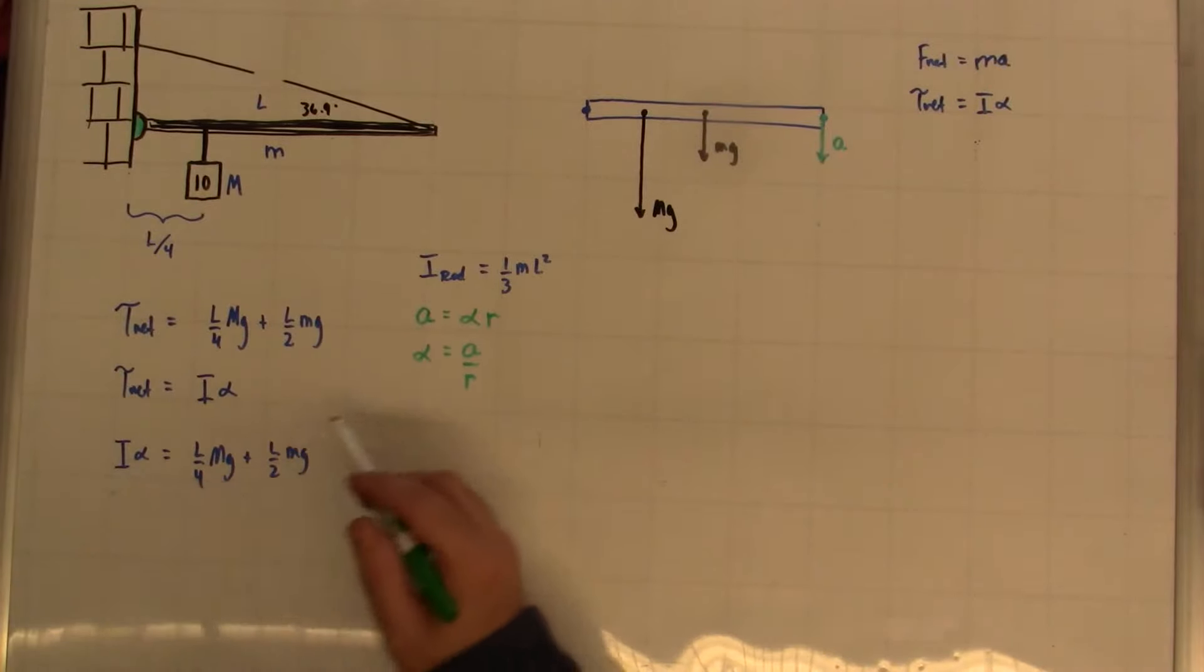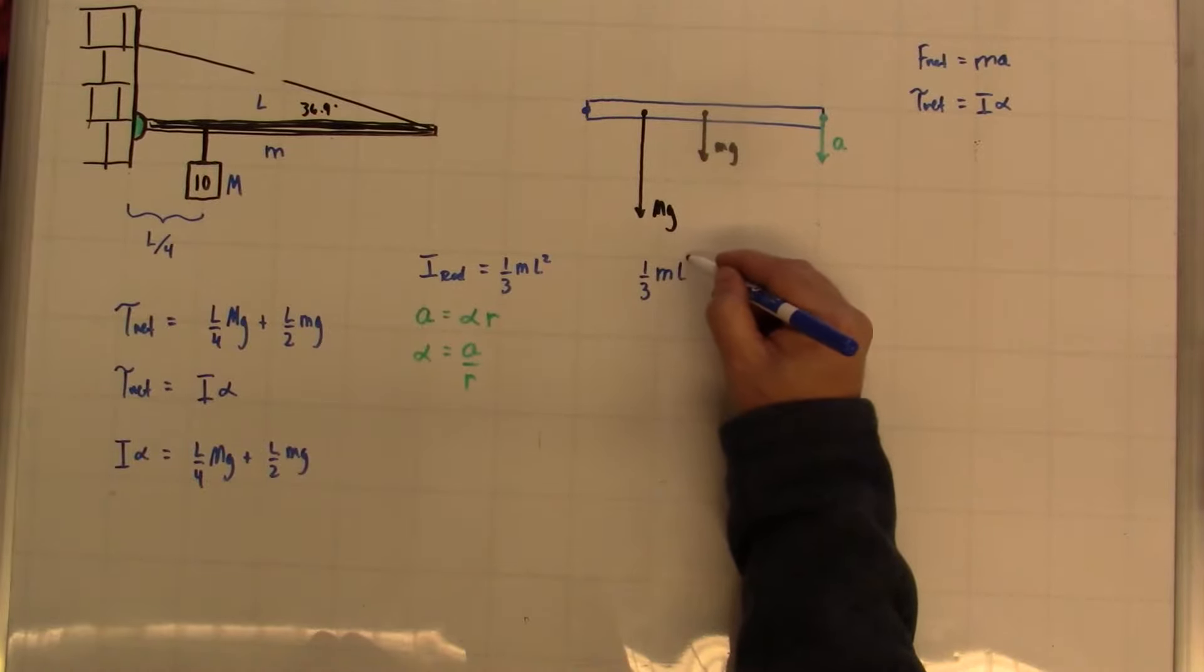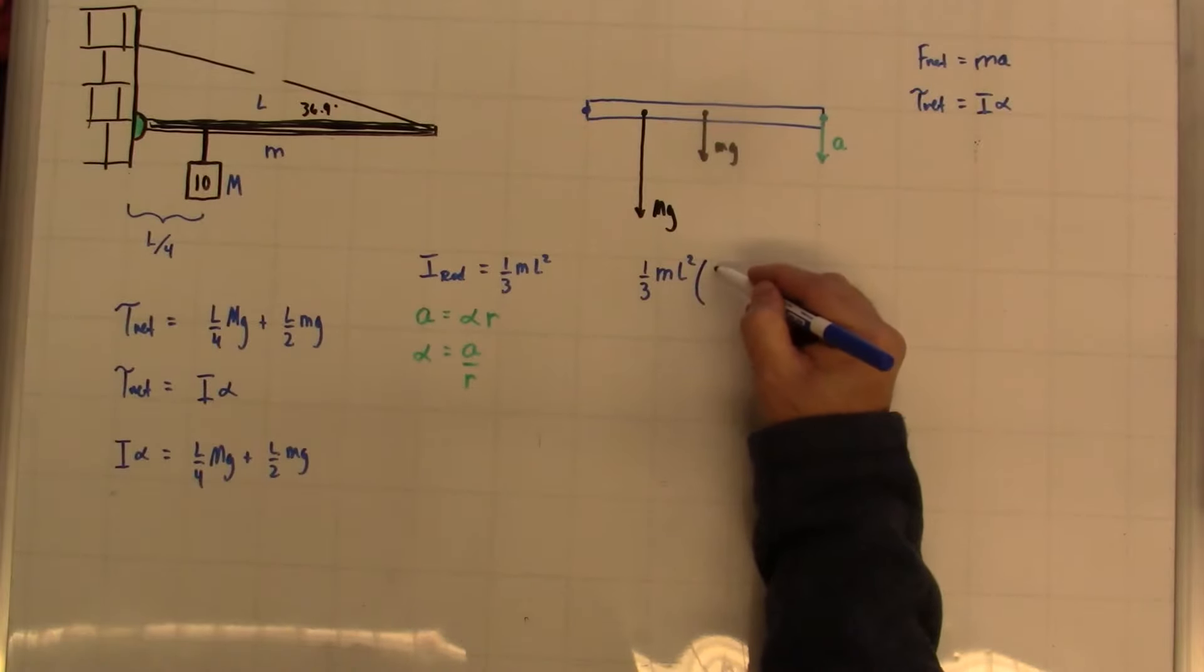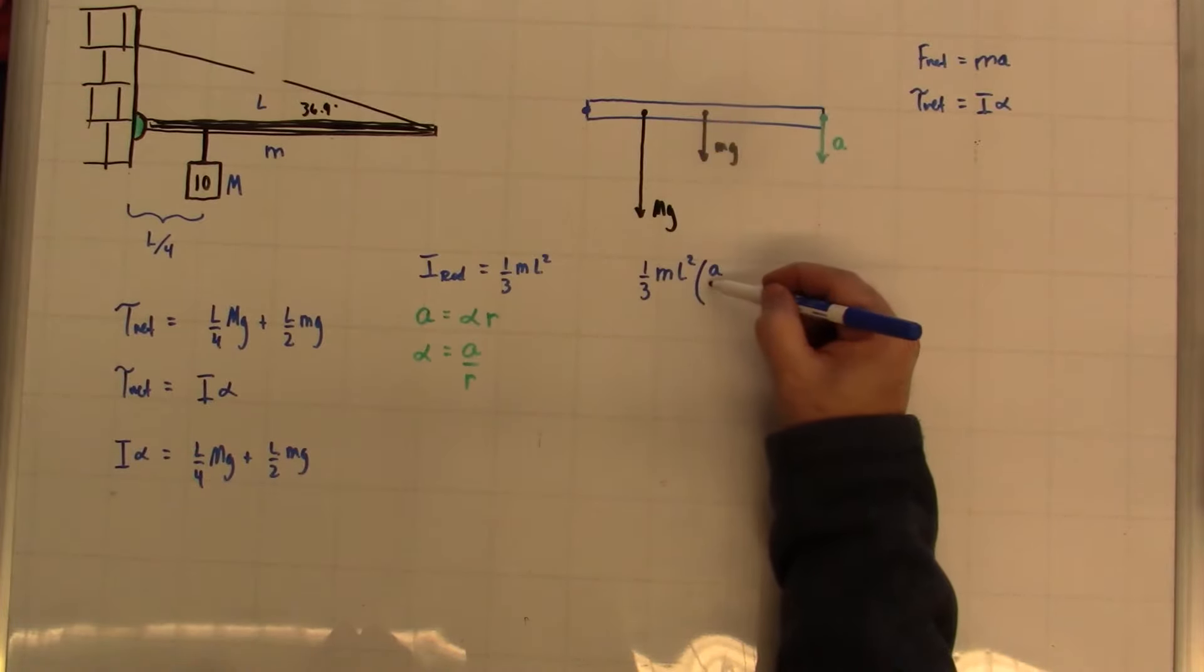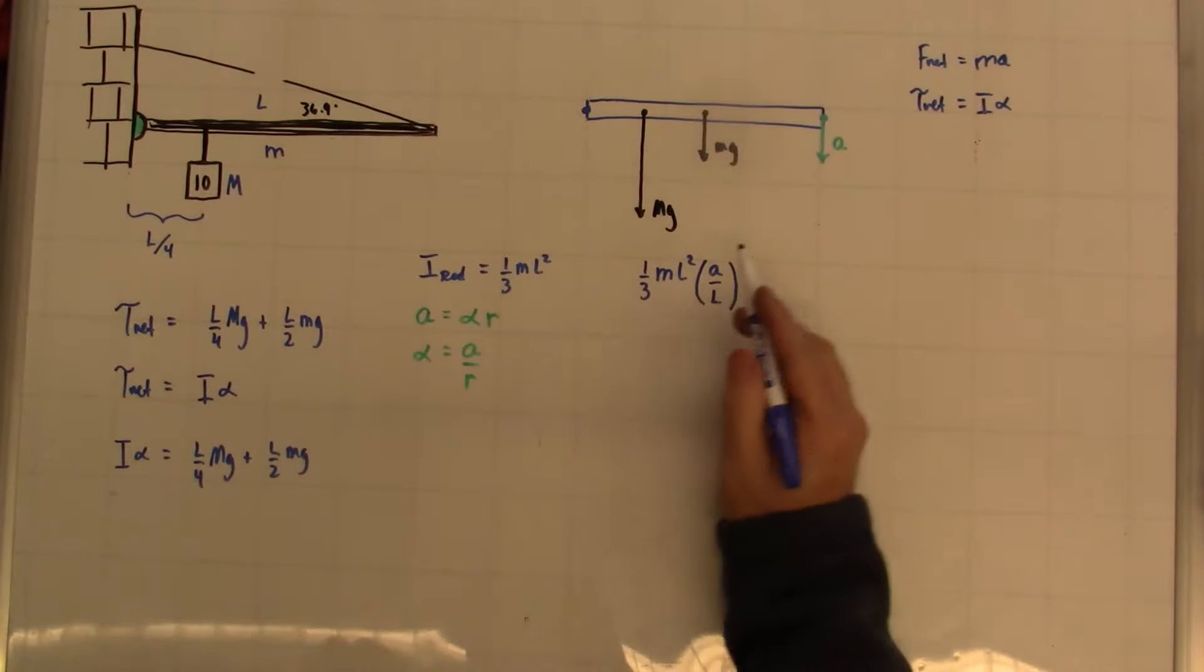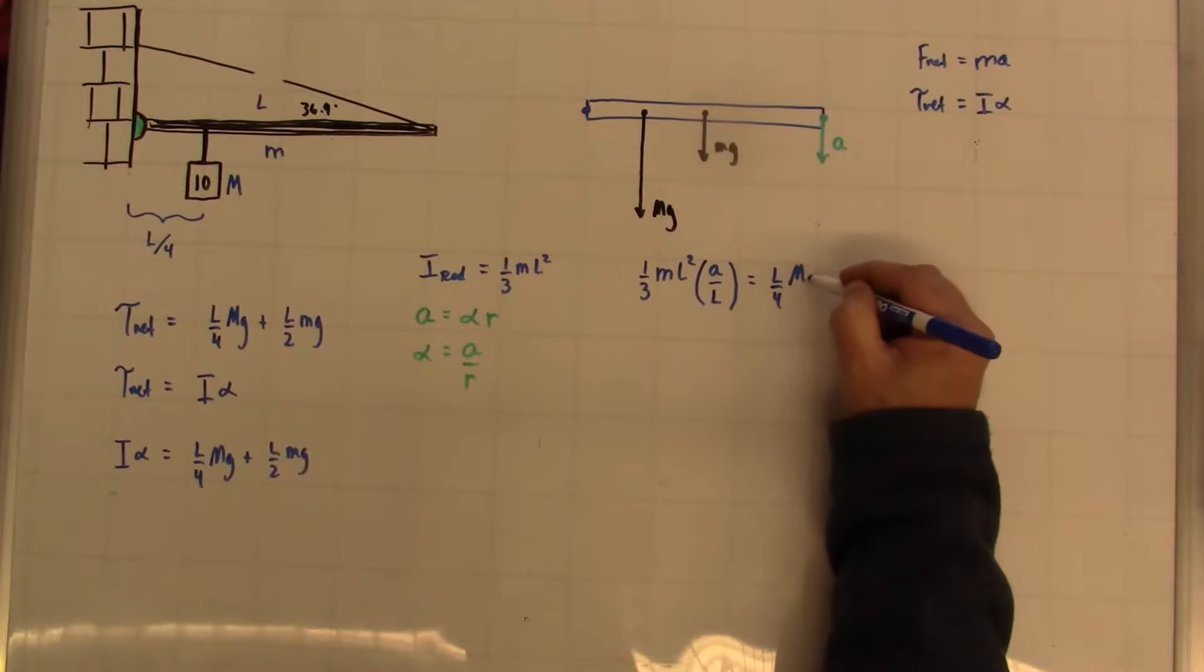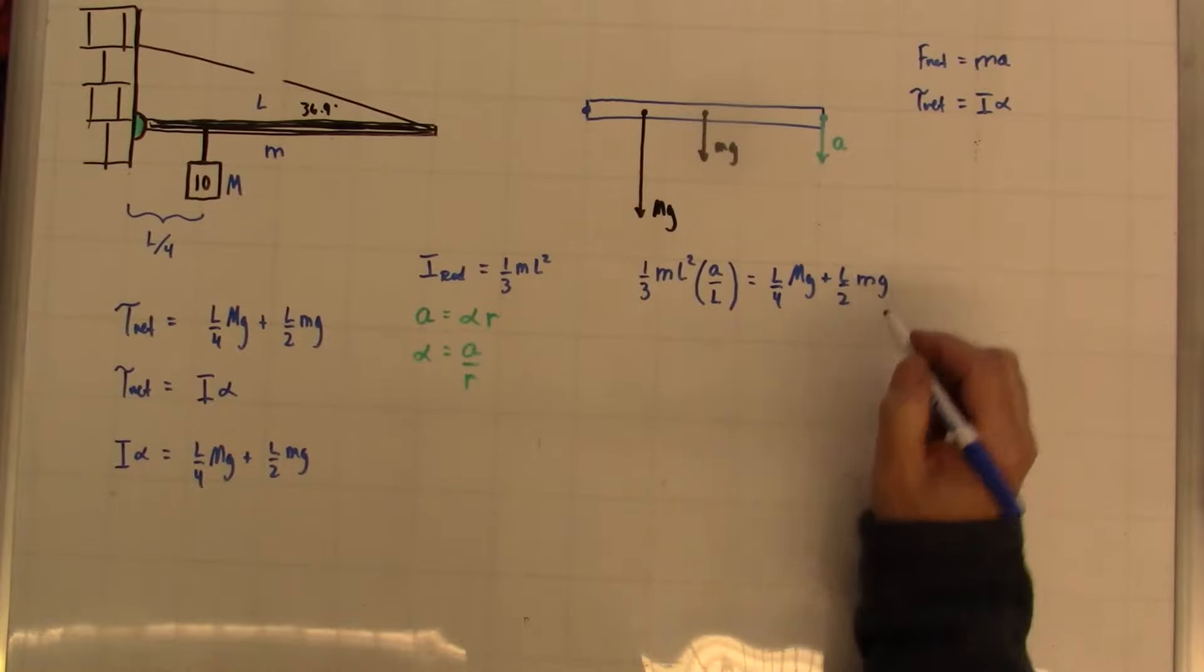So let's try. So I have I alpha. My I value is equal to 1 third ML squared. Now my alpha value is A over r. And in this case, the r is the distance from the pivot point to the point I'm looking for. So that actually turns out to be the full length. That's the left side. The right side is still the same: L over 4 big Mg plus L over 2 little mg.